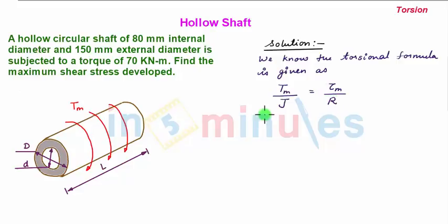We can write: Tm/[(π/32)(D^4 - d^4)] = τm/R = τm/(D/2). Upon substituting the values of Tm and the diameters, we can get the maximum shear stress.